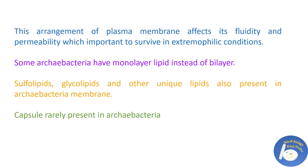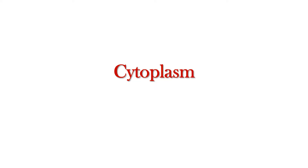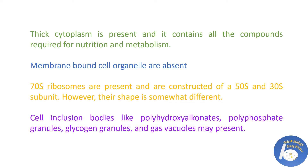Sulfolipids, glycolipids, and other unique lipids are also present in the archaebacterial membrane. Capsule is rarely present. The cytoplasm is thick and contains all compounds required for nutrition and metabolism. Membrane-bound cell organelles are absent. 70S ribosomes are present, constructed of 50S and 30S subunits, though their shape is somewhat different. Cell inclusions like polyhydroxyalkanoates, polyphosphate granules, glycogen granules, and gas vacuoles may be present.